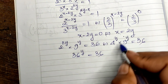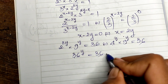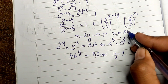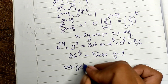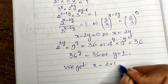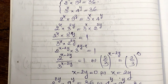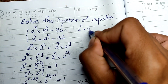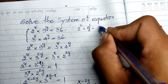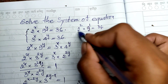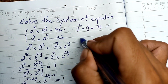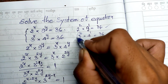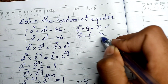Since 4 times 9 equals 36, we have 36^y equals 36^1, so y equals 1. Now substituting y equals 1 back, we get x equals 2 times 1, so x equals 2. To verify: 2^2 times 9^1 equals 4 times 9 equals 36 — correct. And 3^2 times 4^1 equals 9 times 4 equals 36 — also correct.